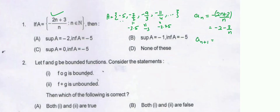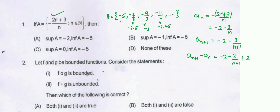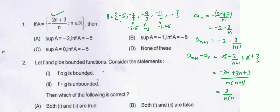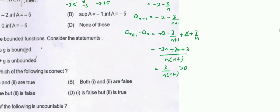Then we can find a(n+1). a(n+1) is minus 2 minus 3/(n+1). Then we can find a(n+1) minus aₙ equals minus 2 minus 3/(n+1) minus (minus 2 minus 3/n), which equals minus 3/(n+1) plus 3/n. This equals 3 upon n(n+1), which is always greater than 0 because n belongs to natural numbers.